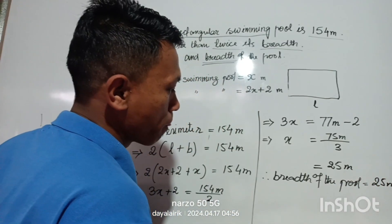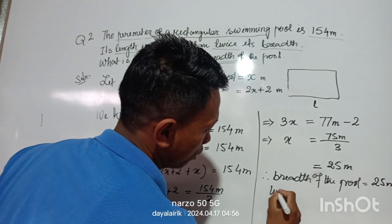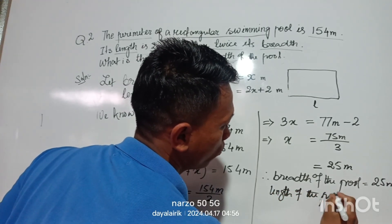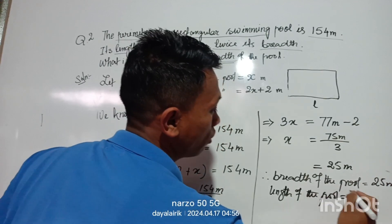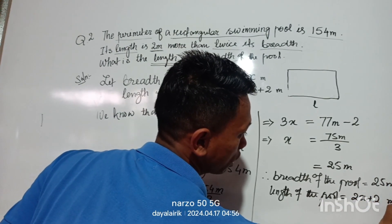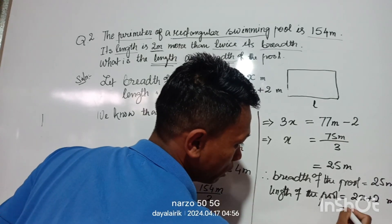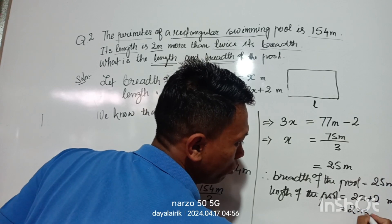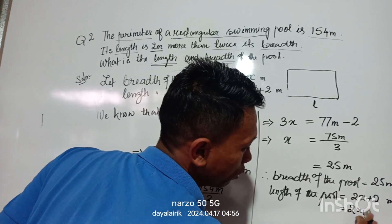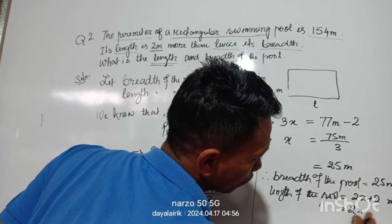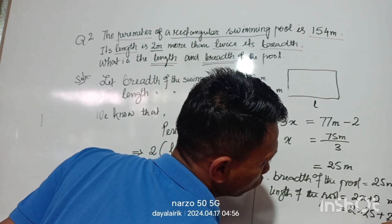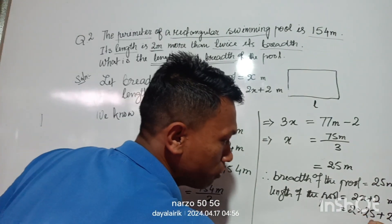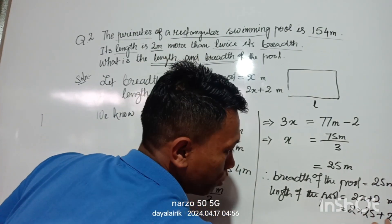The breadth of the swimming pool is 25 meters. The length is 2x plus 2 meters, which equals 2 times 25 plus 2. Two times 25 is 50, and 50 plus 2 is 52 meters.